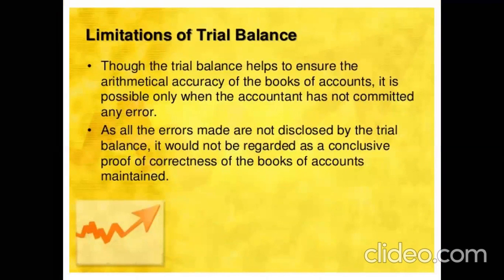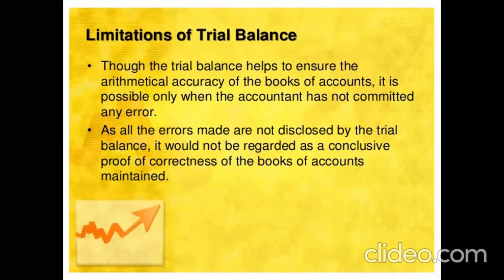The limitations of a trial balance: though it helps to ensure arithmetical accuracy of the books of account, this is possible only when the accountant has not committed any error. If there is any error in making the ledger, that error may continue while preparing the trial balance as well. Since not all errors are disclosed by the trial balance, it would not be regarded as conclusive proof of correctness of the books of accounts. Only a few arithmetical mistakes can be found from the trial balance.